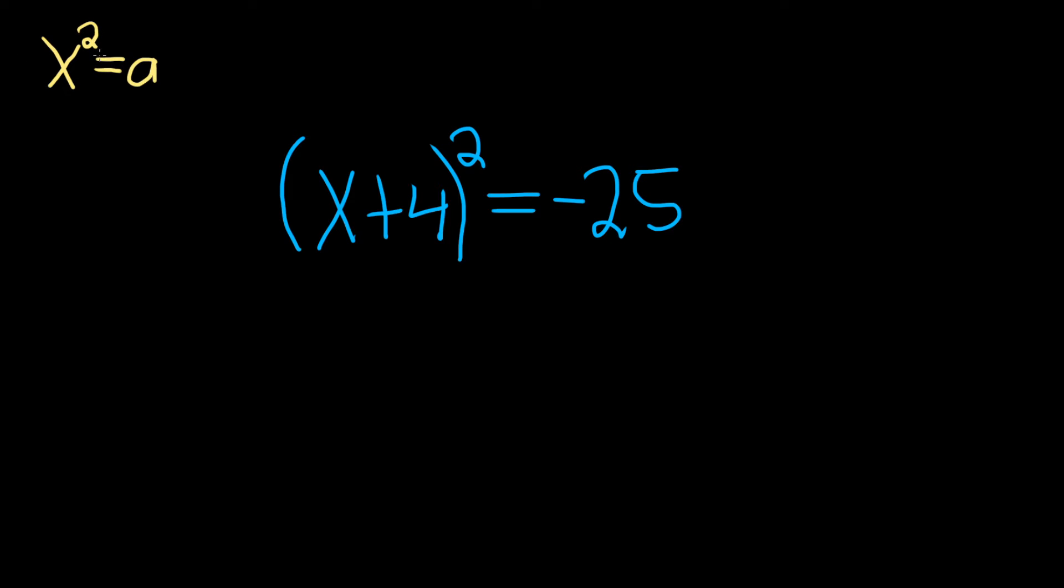what you can do to get rid of the squared is you take the square root of both sides, and then when you do that the squared goes away and the key point is that you get a plus or minus. That's the most important part.